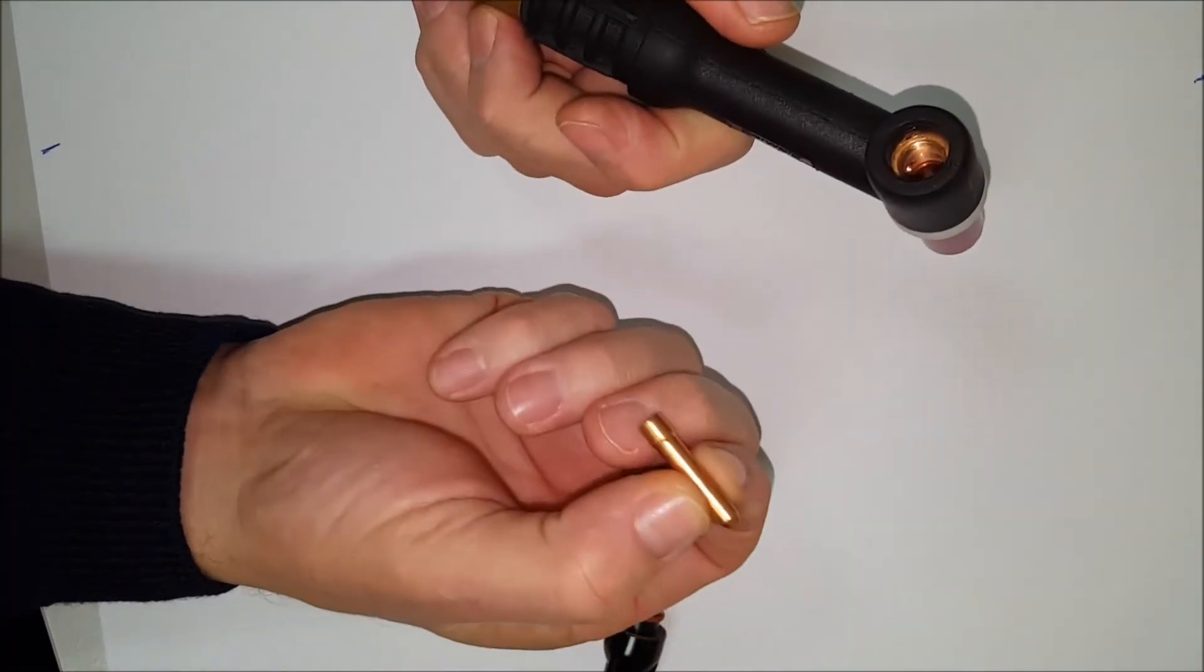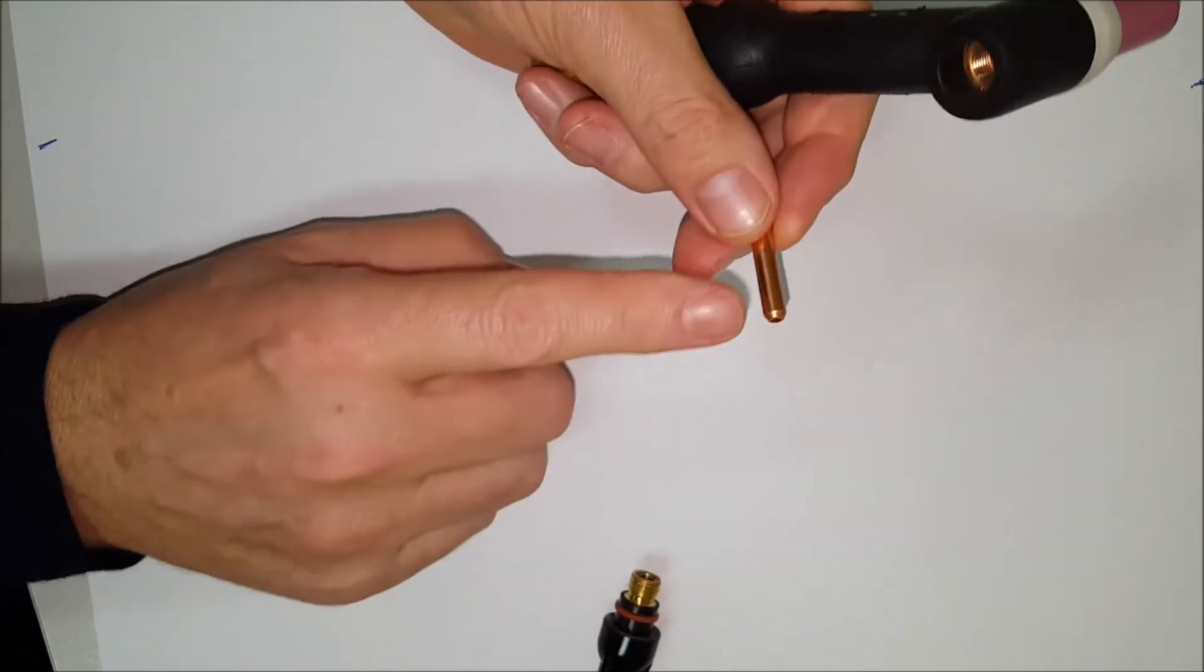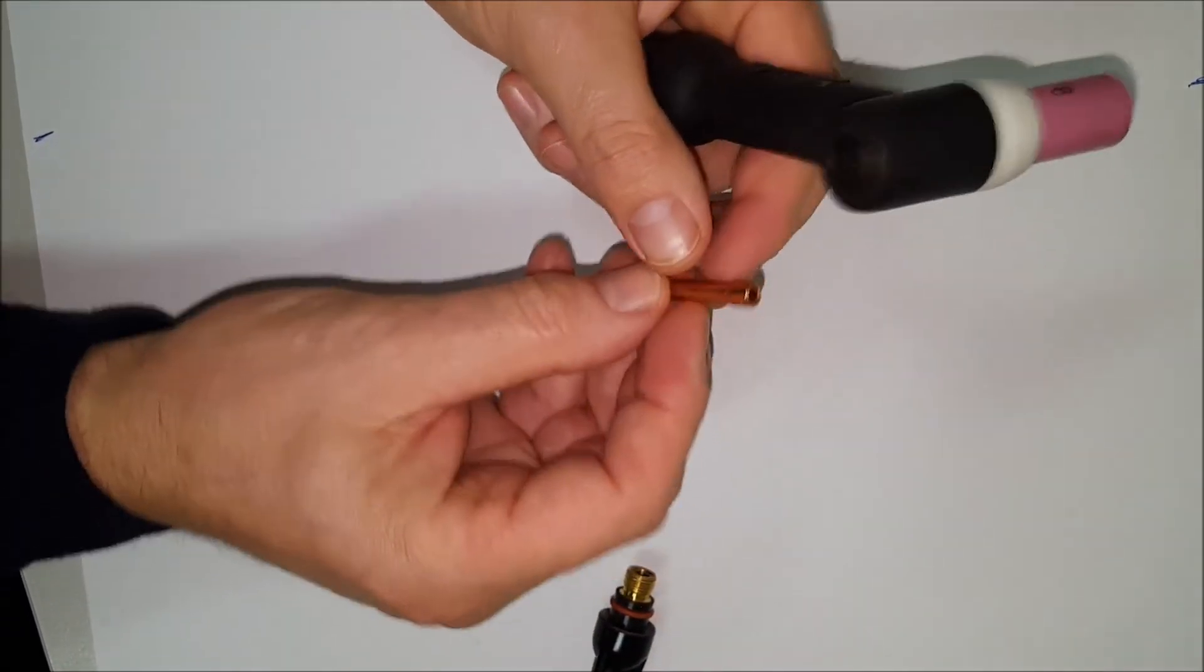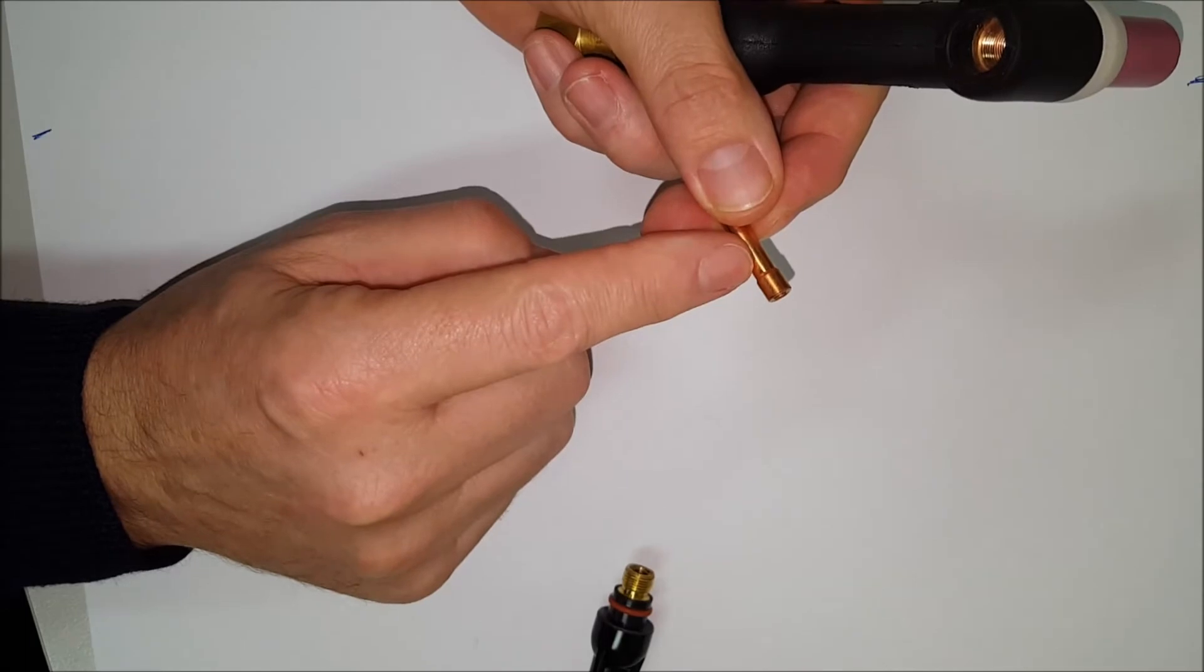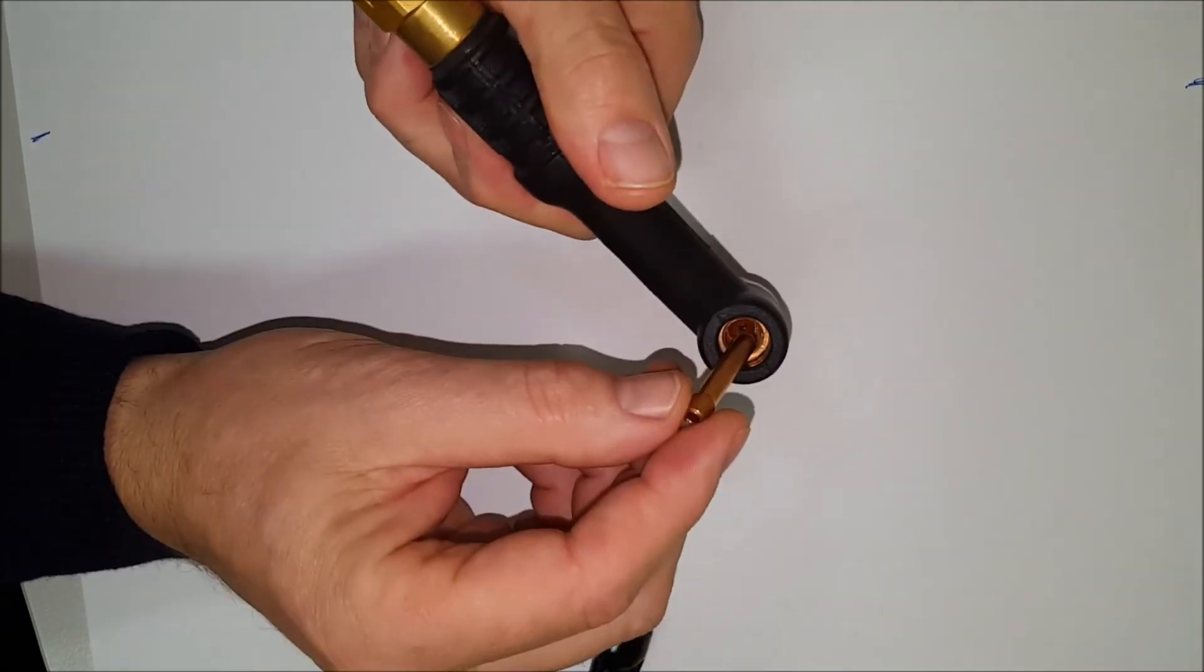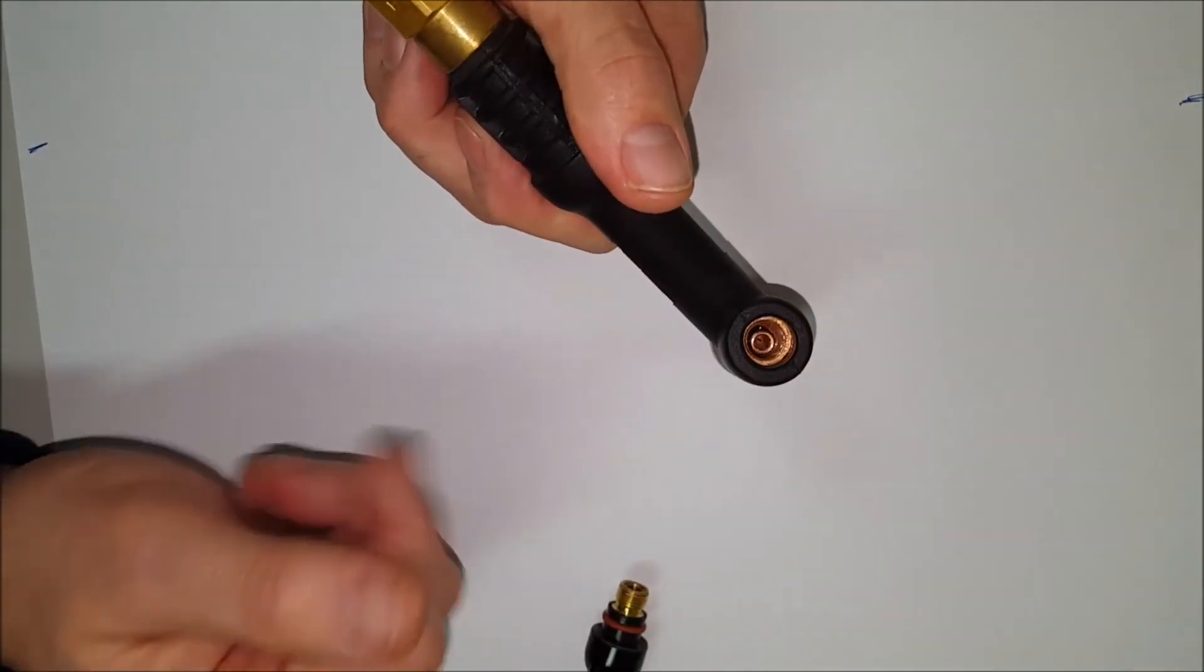Next, we get the collet. The collet has one end that's got a slight chamfer on it and one end that has a collar. This wants to go into the back of the torch with the collar to the back.